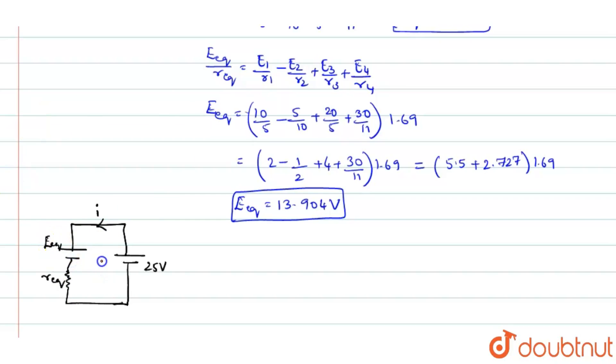So now when I is the current flowing through this, we shall apply Kirchhoff's voltage law. So using KVL, what do you get for this? This is minus 25 plus, sorry, 25 plus 13.904 plus I into the internal resistance 1.69 is equal to 0.